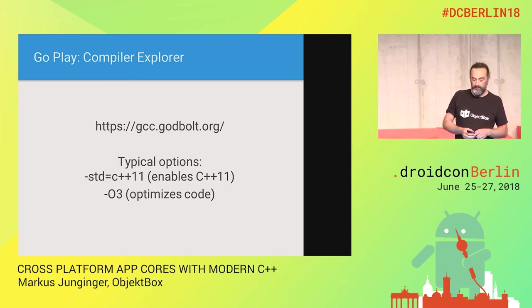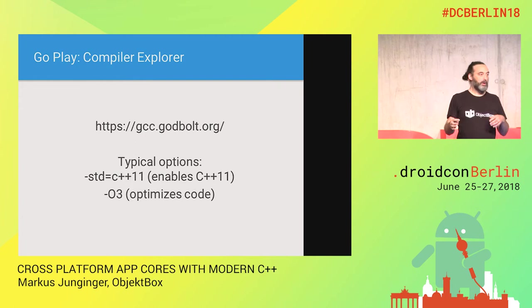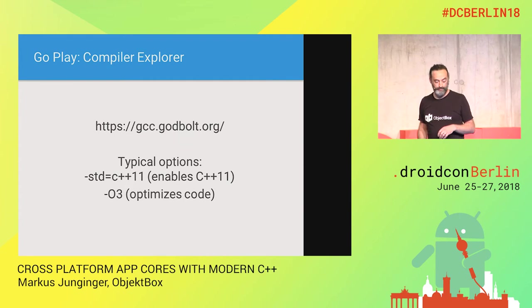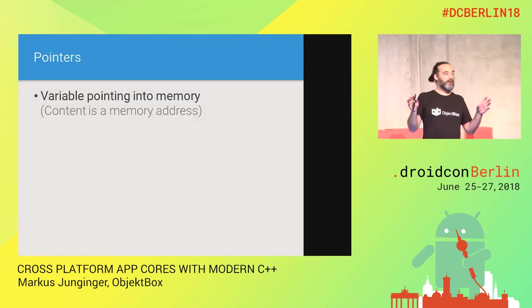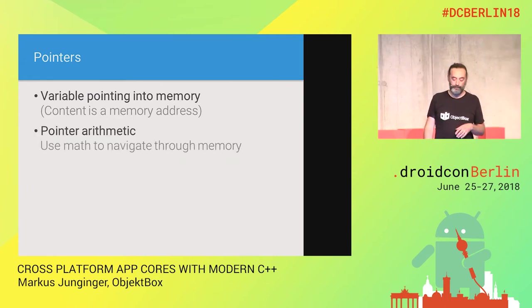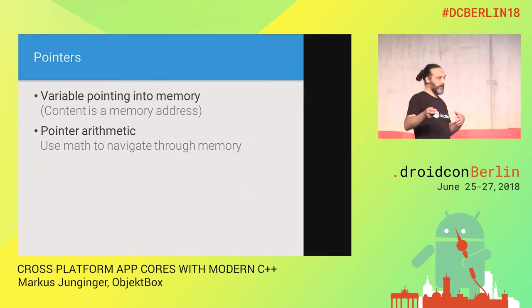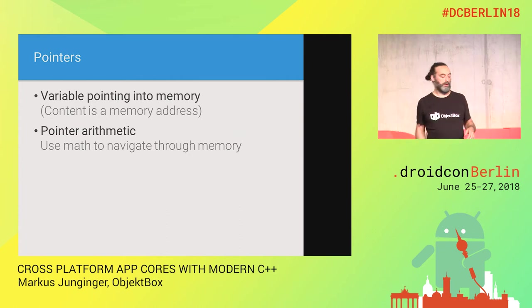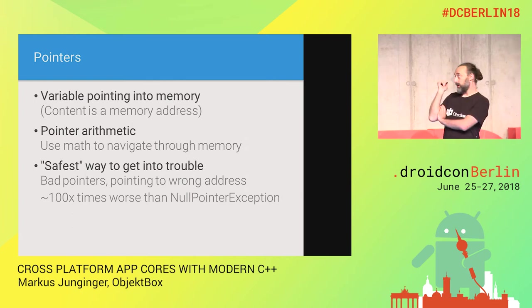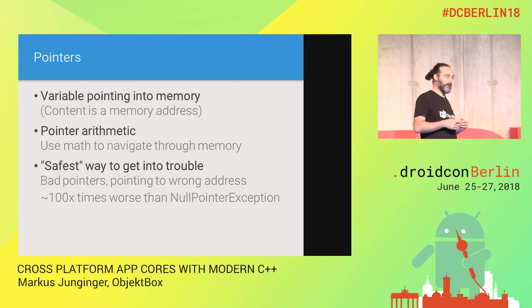There's a very interesting website called the Compiler Explorer, where you can paste in C or C++ code and it will show you the assembly output — you can really look under the hood of what compilers do. The point here is: pointers. If something goes wrong, it's usually a bad pointer in your program, and this can get really nasty. If you're troubled by null pointer exceptions in Java, bad pointers in C++ are way worse than that.